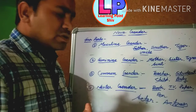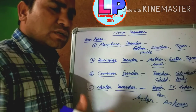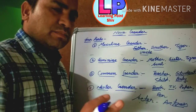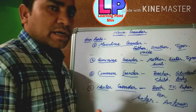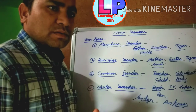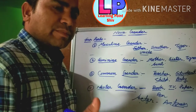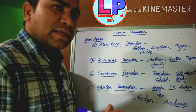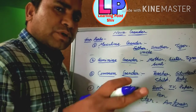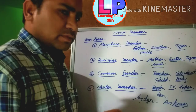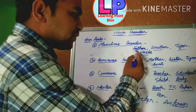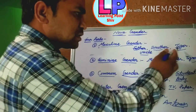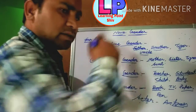Masculine gender is such a gender that denotes males. What are the words for male? Like father, brother, tiger, uncle.